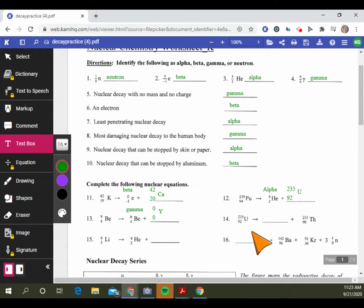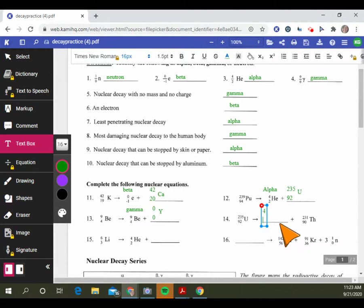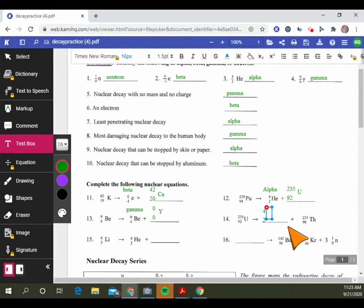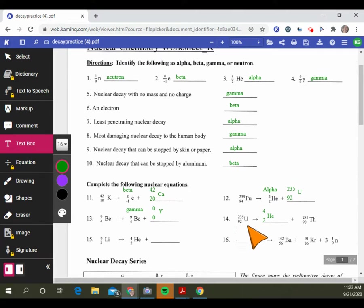Number 14 is just a little bit different. You start with uranium-235 and end up with thorium-231. It's asking what happened, what was thrown out? We have to do algebraic thinking. If I started with 92 and ended with 90, I had to lose 2. If I started with 235 and ended with 231, I had to lose 4. That matches the alpha particle.